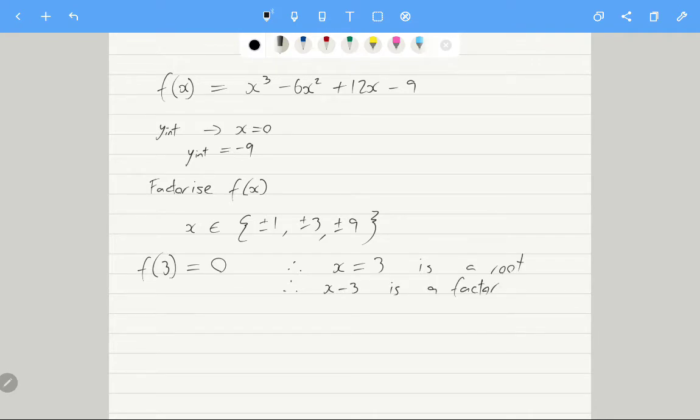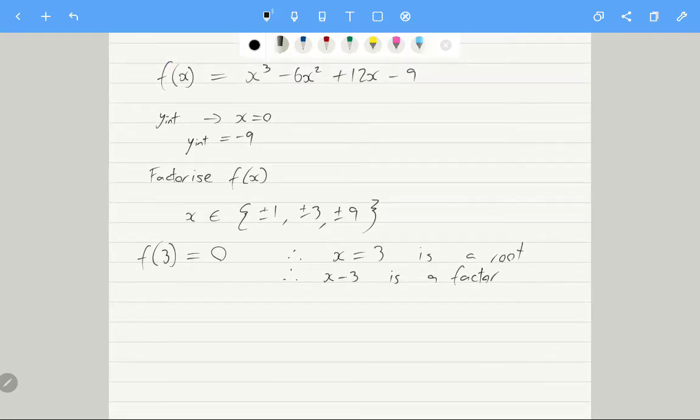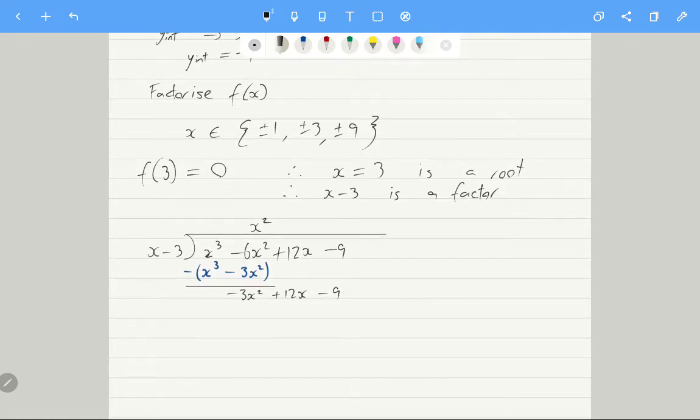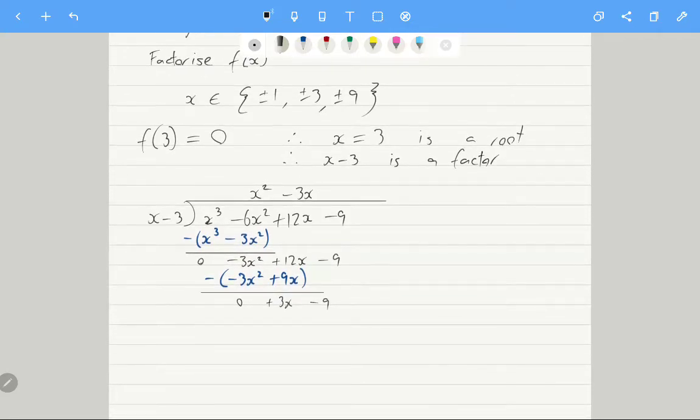Time to do some long division of this cubic. First factor is x². And we're left with -3x² plus 12x minus 9. And the common factor we then find is -3x. And we subtract off that to leave us with 3x minus 9. And the common factor there is 3.